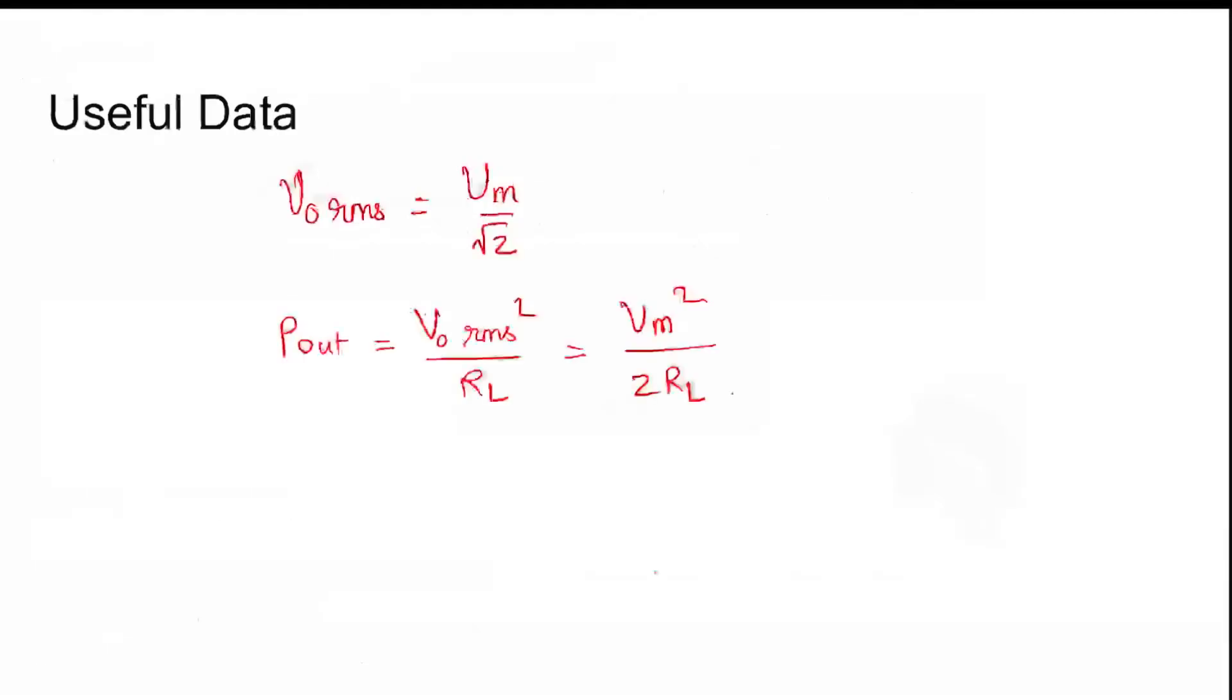Coming to the useful data: the input sinusoidal voltage is the output of an uncontrolled single-phase diode bridge rectifier, that is full-bridge rectifier. The RMS voltage V_out_rms equals V_m divided by root 2, where V_m is the peak of the input supply voltage.